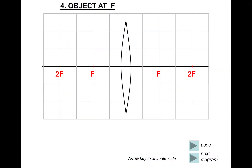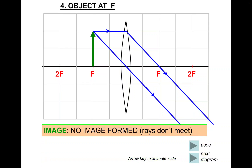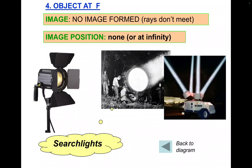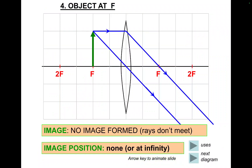Object at F. Parallel to the axis, refract through F, straight through the optical centre. The rays don't meet — there's no image formed. Image position: none, or at infinity. Use: searchlights.